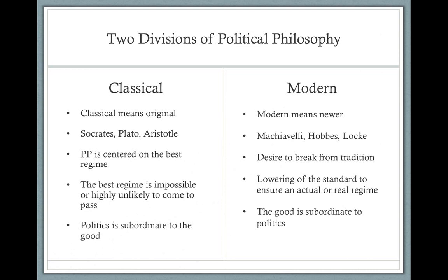Classical political philosophy's central theme, and the most fundamental question it seeks to answer, is the question of the best regime. What is the best regime? What would that regime look like, what would that city look like? And really, to get at the heart of that question, the best regime will be a regime in which justice — ultimate justice — takes place, where everyone gets what they deserve. We can say that classical political philosophy focuses on the best regime, and that best regime will serve as the standard by which we can evaluate other types of regimes.